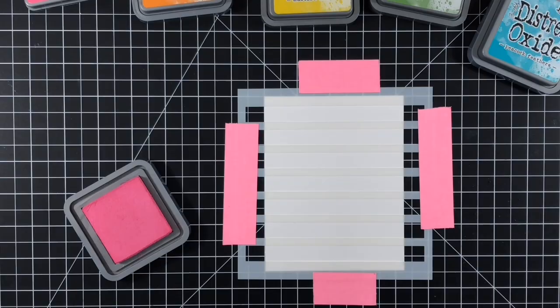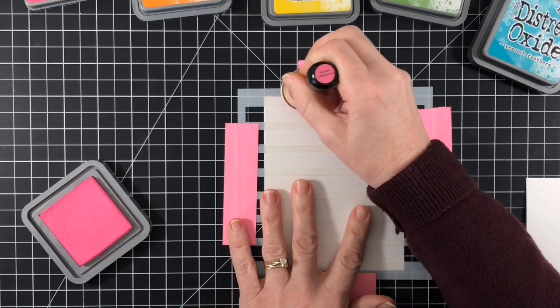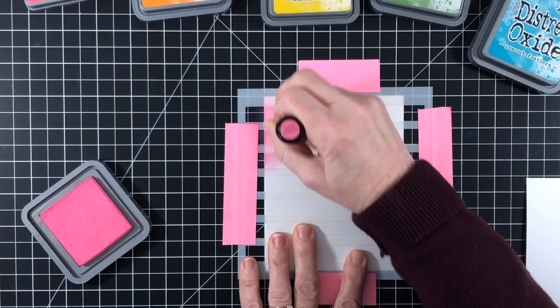We're going to use Distress Oxide inks and start off with Picked Raspberry, which I'm going to put in the upper left corner on an angle. So I'll just lay the color down to get a good start.